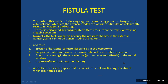Fistula test: This is an important test. Its basis is to induce nystagmus by producing changes in pressure in the external canal, which can be transmitted to the labyrinth, resulting in nystagmus and vertigo. The test is performed by applying intermittent pressure on the tragus or by using a Seigel's pneumatic speculum. Normally this test is negative because pressure changes cannot be transmitted to the labyrinth unless there is a communication. It is positive when there is erosion of the horizontal semicircular canal, as in cholesteatoma, iatrogenic or surgical fenestration, post-stapedectomy fistula, or rupture of the round window membrane. A positive fistula test implies the labyrinth is still functioning; it is absent when the labyrinth is dead.